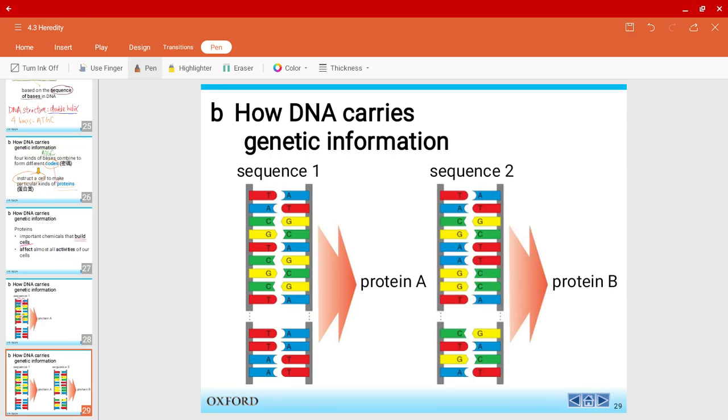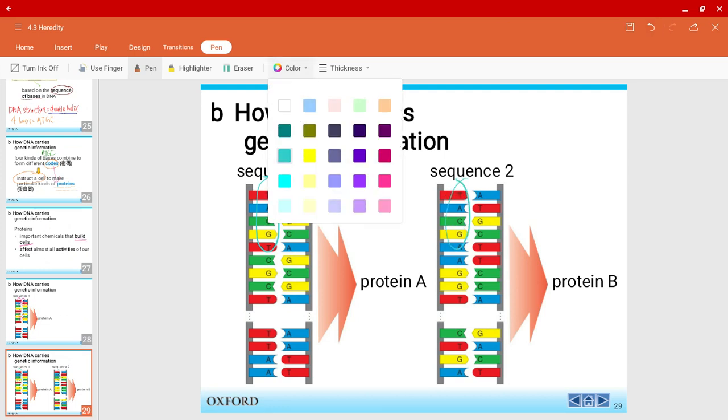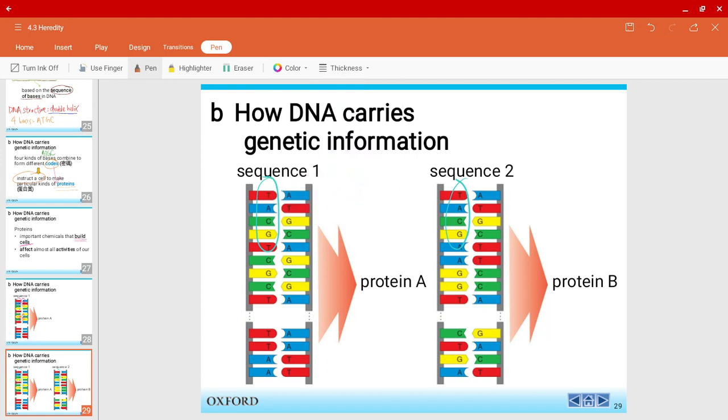And now look at this sequence, on the other hand. The first couple of base pairs, they're pretty much the same. T, A, C, G. And then after that, you will notice that the bases start to change. And because this is a different code, there are different codes now, it will instruct a cell to make a different kind of protein now. So do you get the logic?